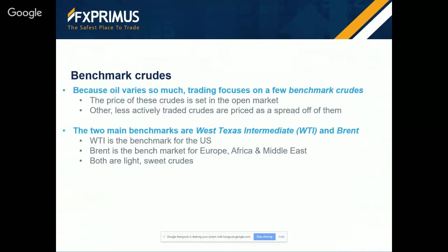WTI, West Texas Intermediate, is a blend of several oils from West Texas, while Brent comes from various fields in the North Sea, offshore Scotland. Originally Brent just came from the Brent field, but now it's more of a trading classification comprising a blend of several oils. The name Brent came from the naming policy of Shell Oil, which used to name its fields after birds — in this case, the Brent goose. WTI is used as the main benchmark for US oil, while Brent is used for pricing oil produced in Europe, Africa, and parts of the Middle East. Both are light-sweet crudes, though WTI is a bit lighter and sweeter. There are investors who trade the difference between the two oils rather than taking a view on the direction of oil itself.